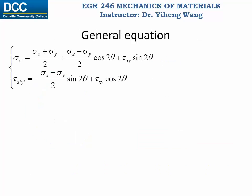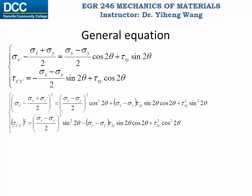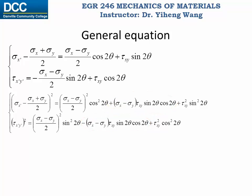Now let's come back to the general equations for plane stress transformation that we derived earlier. For the first equation, let's move this term to the left hand side. Now let's square both equations and expand the right hand sides. We notice that if we add these two equations together, these two terms get cancelled out. Therefore let's add them together.